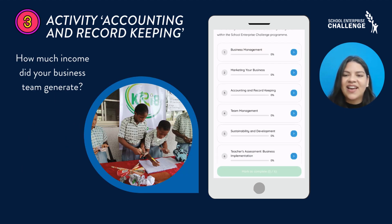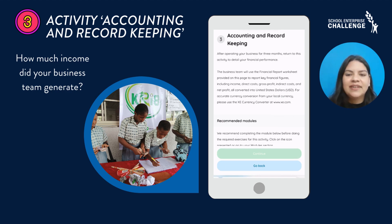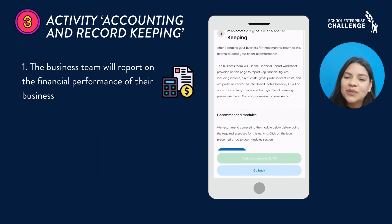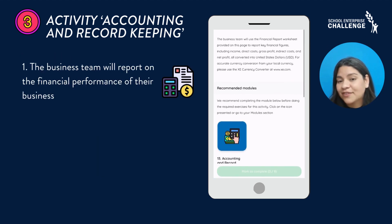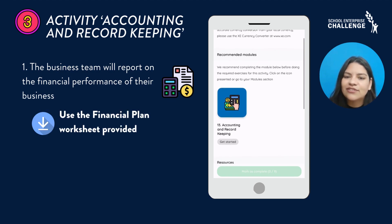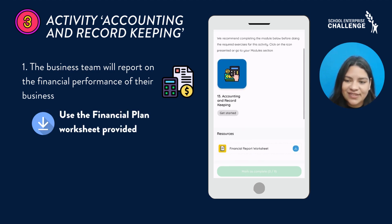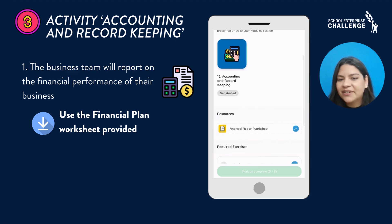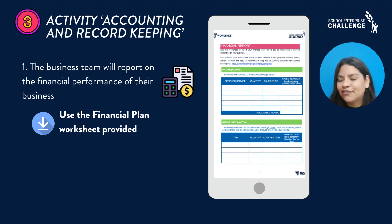Activity 3: Accounting and Record Keeping. In this activity, your team will need to report on the financial performance of their business. This will be done through the guidelines of our worksheet provided, including questions on period of time, income, direct costs, indirect costs, net profit, and gross profit.